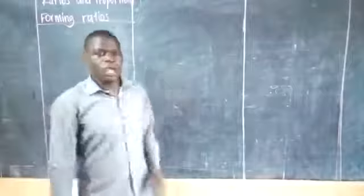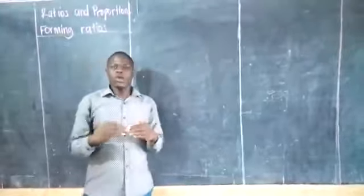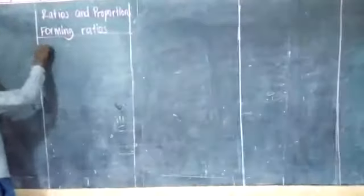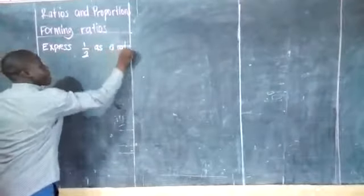Today we are going to look at forming ratios. How do we form ratios? If they give you a fraction and ask you to express that fraction in ratio form, the top number of the fraction will be the first part of the ratio and the denominator will be the second part. So they will say: express 1 out of 2 as a ratio.